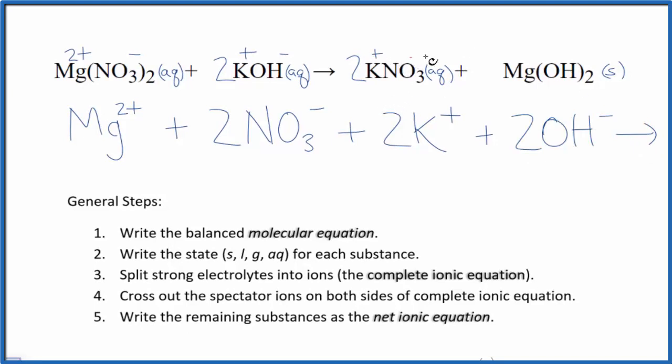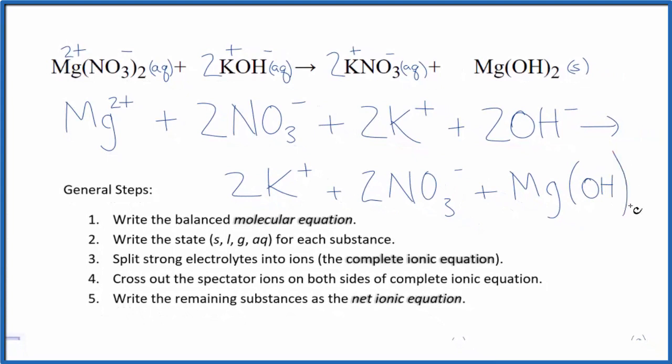So we had a plus and a minus. Two potassium ions again in the products, and two nitrate ions. And then magnesium hydroxide—since that's a solid, we don't split solids apart in net ionic equations. It just stays together. This is our complete ionic equation.